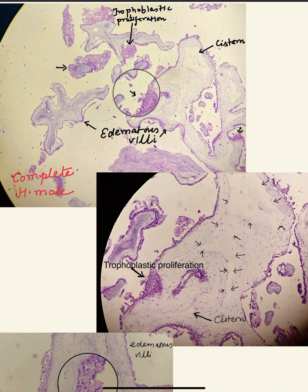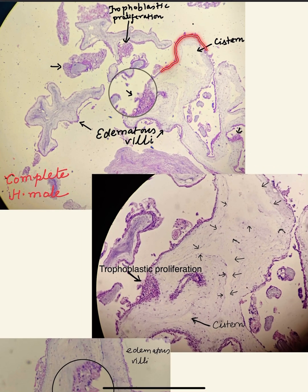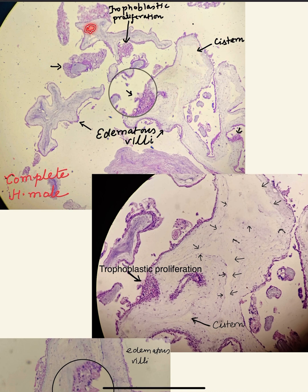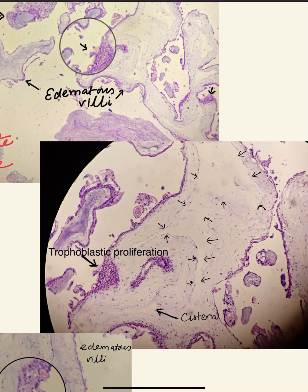In this microscopic image, you can see all these villi which are dilated. In the magnified center, there is trophoblastic proliferation visible. The villi are dilated and in the center you can see empty spaces — these are the cisterns. This H&E image shows the same features: the space indicated by arrows is the cistern formation — an empty space — and the villi are showing marked hydropic degeneration, appearing very whitish and edematous.